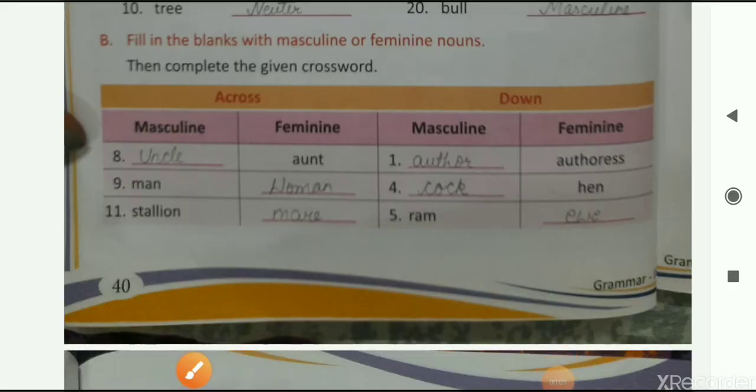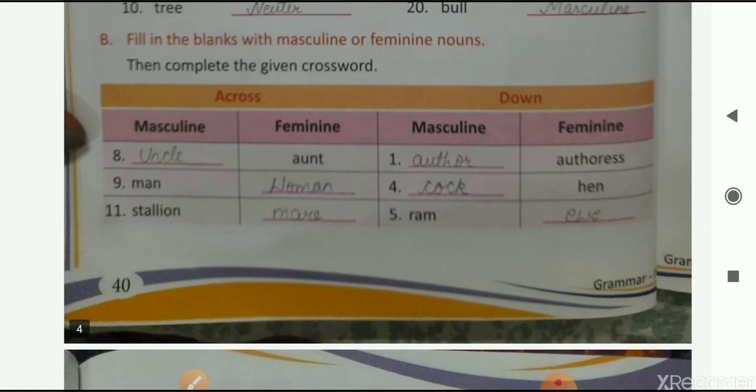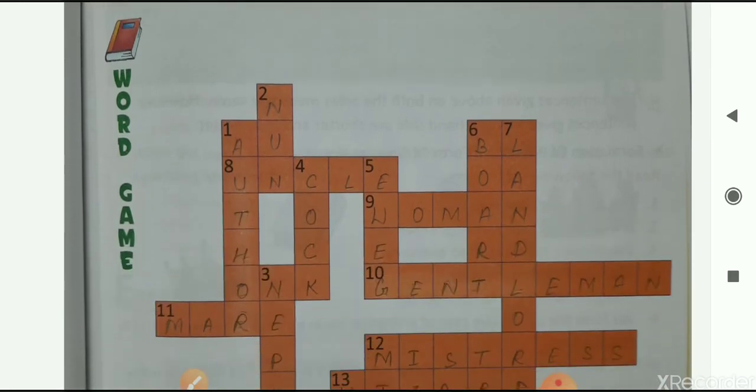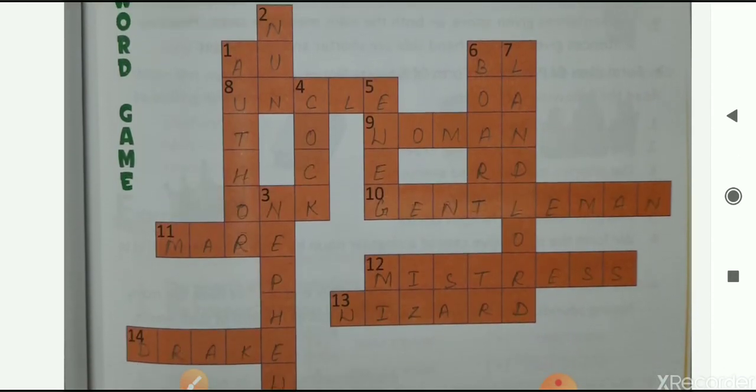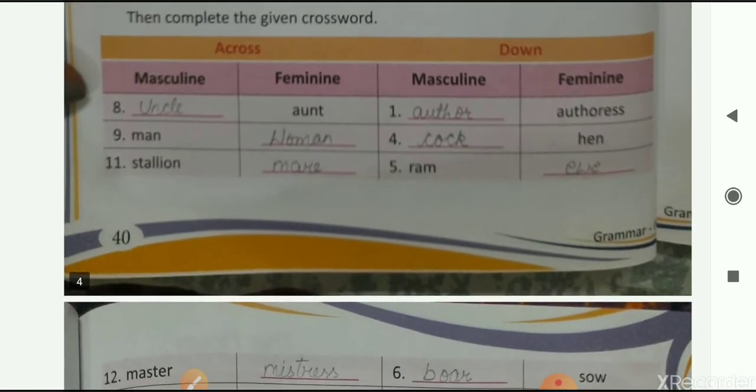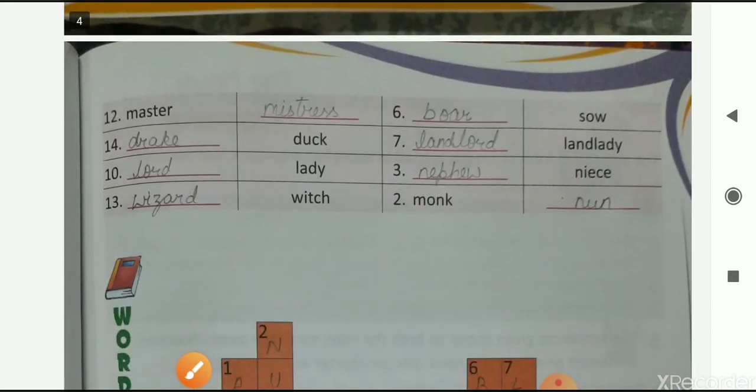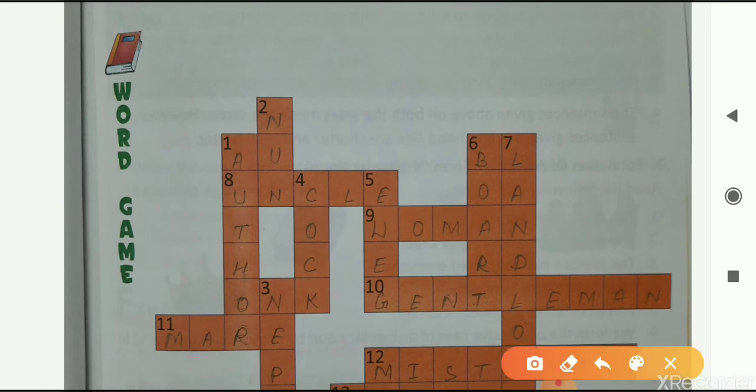Then exercise B. Fill in the blanks with masculine or feminine nouns. Then complete the given crossword. You have to fill masculine or feminine noun here. And then you have to fill this crossword that is given on next page. First one is, you have to write down masculine noun of aunt. So masculine noun, uncle.